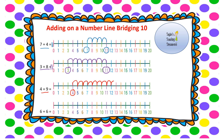We've landed on 13, so 4 add 9 equals 13. It does help when you're doing this if you count out loud, because if you forget to count as you do each jump you might miss a jump and end up with the incorrect answer.